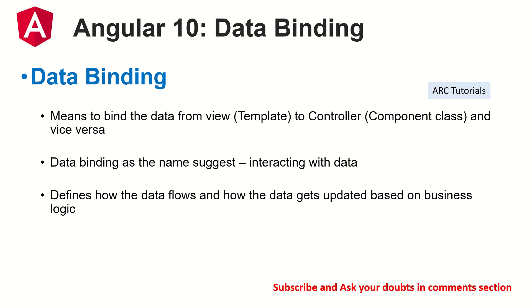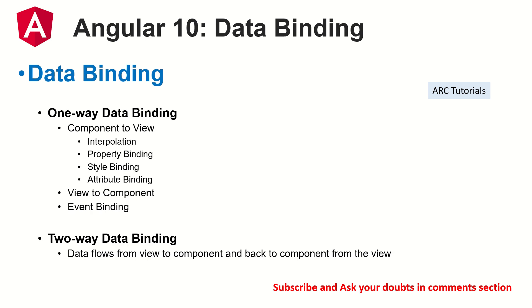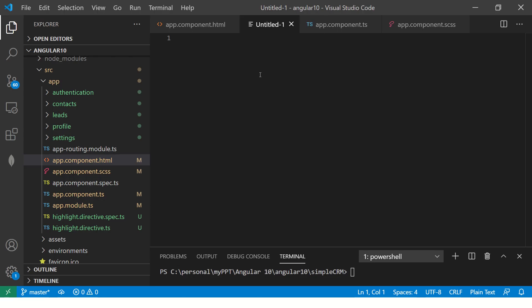So what is data binding? Especially for people who are starting as a beginner or who are coming from a new programming background — data binding means that you are trying to bind the data from the view to the controller and vice versa. As the name suggests, it is interacting with the data. You're taking data from your component, putting it into the template, and from the template you're putting it back to the component based on some conditions or expressions. Data binding means defining how the data flows and how it gets updated based on some business logic.